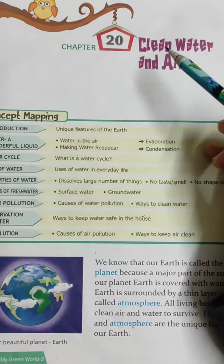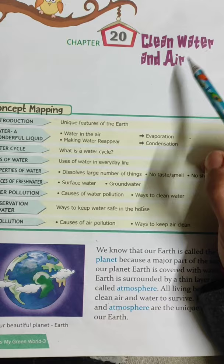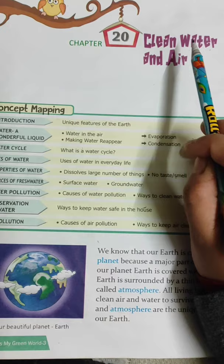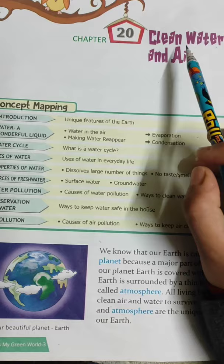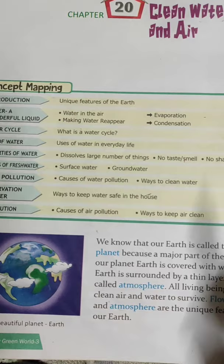Hello everyone. Today we would be discussing another lesson from our previous book, that is chapter number 20, Clean Water and Air. Water means paani and air means hawa. Water and air should be clean to be consumed. In this chapter we would be discussing about the importance of clean air and water and how we can contribute to keep our environment clean and healthy.